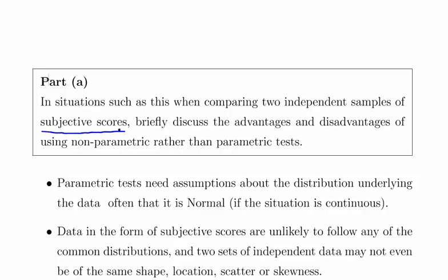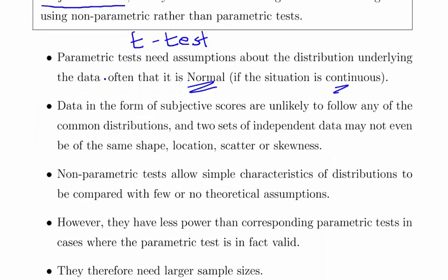The parametric tests, the most famous one being the t-test, need assumptions about the distribution underlying the data, often that it is normally distributed and continuous. That might not be the case in a lot of data you're working with in medical statistics. Data is in the form of subjective scores and unlikely to follow any common distributions. Two sets of independent data may not even be the same shape, location, scatter or skewness.